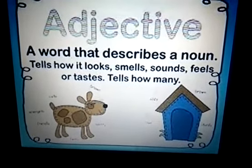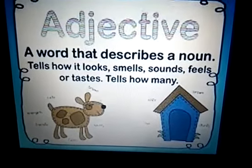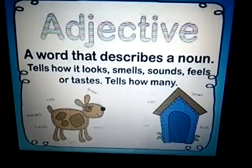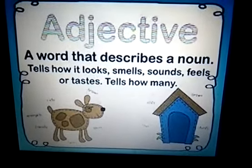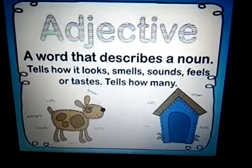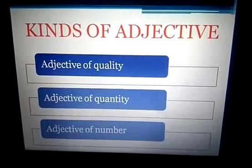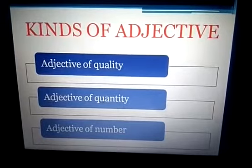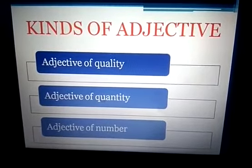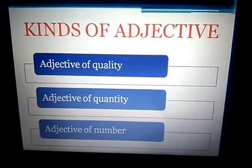A word that describes a noun — tells how it looks, smells, sounds, feels, tastes, etc. — is called an adjective. We have already discussed kinds of adjectives: adjective of quality, adjective of quantity, and adjective of number.